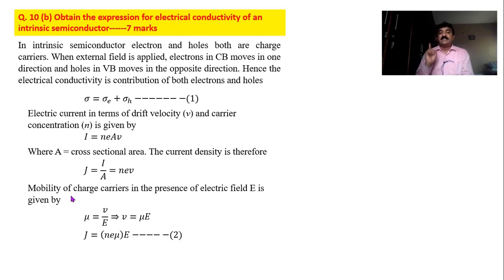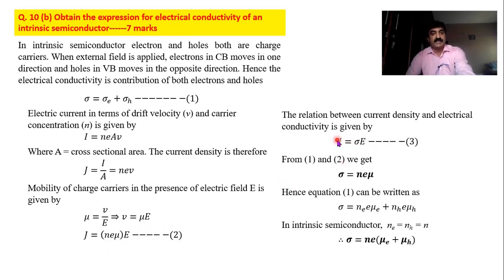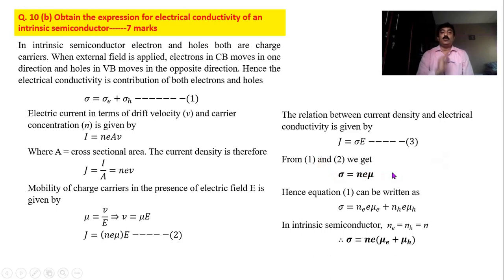Substituting v = mu·E into the J equation: J equals ne·mu·E, which we group as (ne·mu)·E. We also have from PUC second year: J equals sigma·E. Comparing the two equations, sigma equals ne·mu. That is the conductivity, where n is the number of charge carriers, e is the charge on the particle, and mu is its mobility.